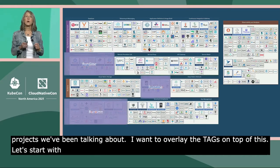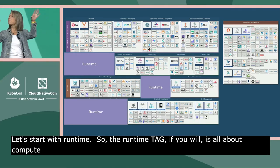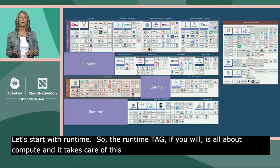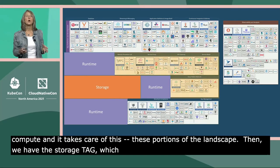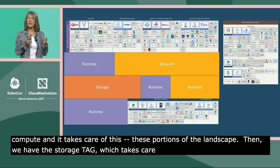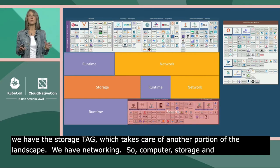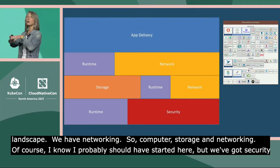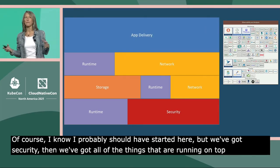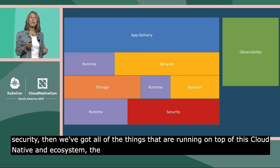I want to overlay the TAGs on top of the landscape. Starting with TAG Runtime — it's all about compute and it covers those portions of the landscape. Then we have TAG Storage, which covers another portion. We have TAG Networking — so that's compute, storage, and networking. Then of course there's TAG Security. Then there's all the things running on top of this cloud native platform — that's the TAG App Delivery. And finally we have the TAG Observability.